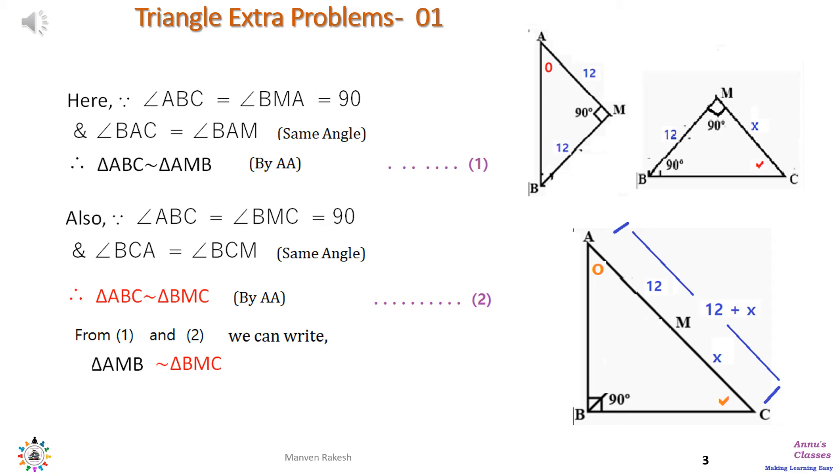First we compare ABC with BMA. Between these two triangles, angle ABC is equal to angle BMA, both are right angles. Angle BAC marked as a circle is equal to angle BAM, both are the same angles. Therefore by AA rule, triangle ABC is similar to triangle AMB.